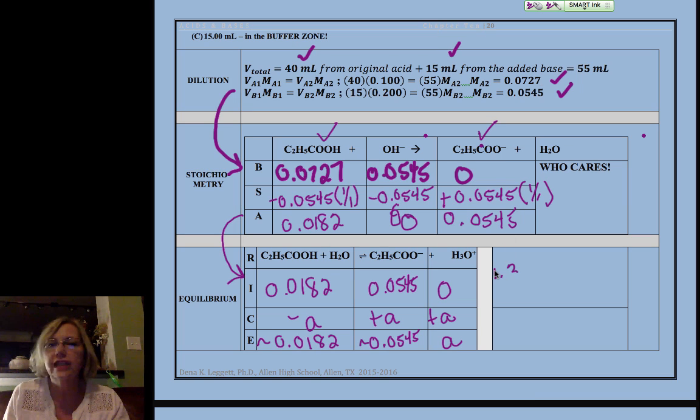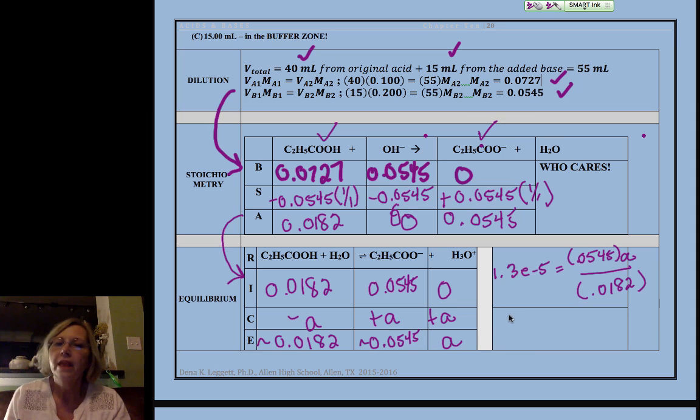So now when I plug that into my K expression, I get 0.0545 times a. We already saw the expression in a previous video, so to save time I'm not showing that. Those of you who like Henderson-Hasselbalch equation, you will notice that when I have both my acid and some of the conjugate, you could have hopped right into the Henderson-Hasselbalch equation from here.